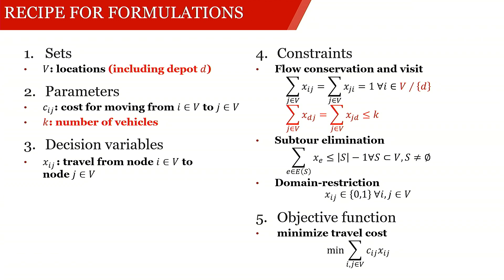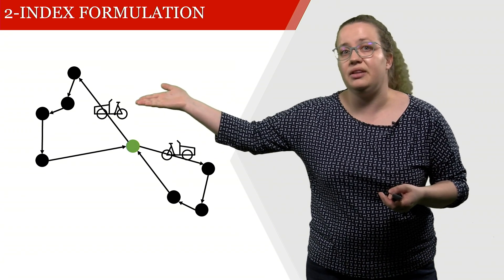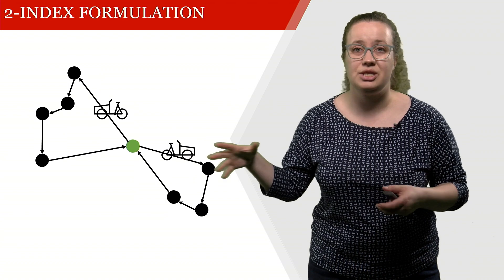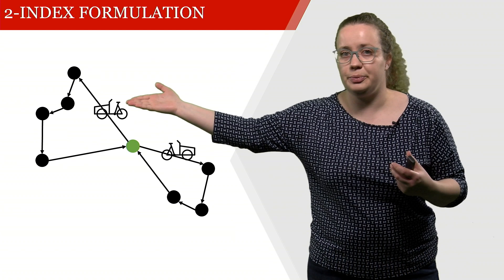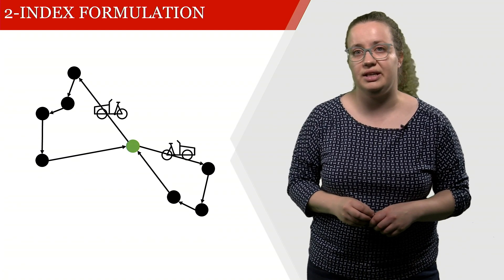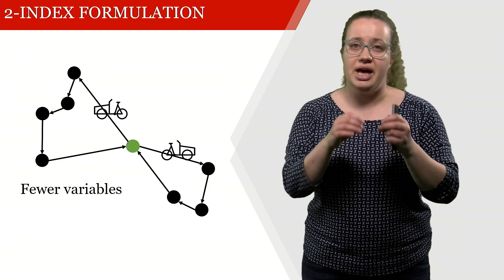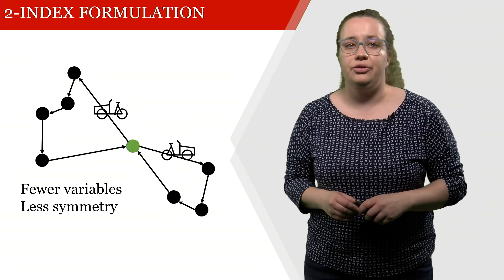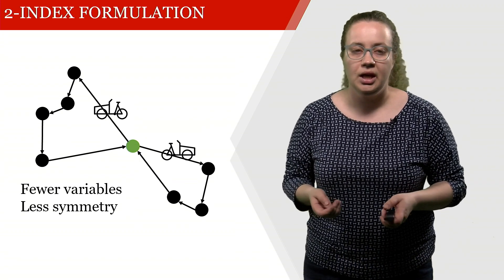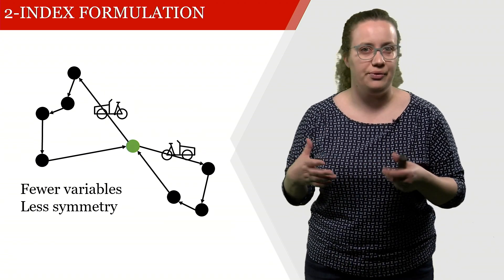Everything else in this mathematical model formulation stays the same. With this formulation, we no longer differentiate between whether this cargo bike is red or this one is blue, or vice versa. But instead, we just say there's a cargo bike travelling here and there's another cargo bike travelling down here. That results in considerably fewer decision variables, because we don't have this third dimension on our decision variable X. This also results in considerably fewer symmetry, which together, of course, results in a considerable reduction of runtime of off-the-shelf solvers.